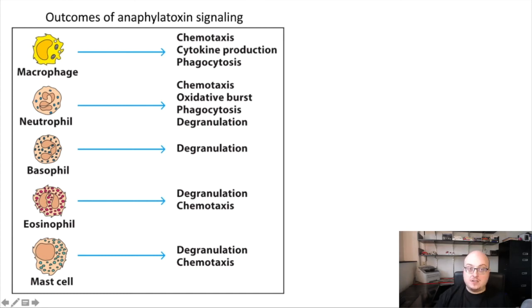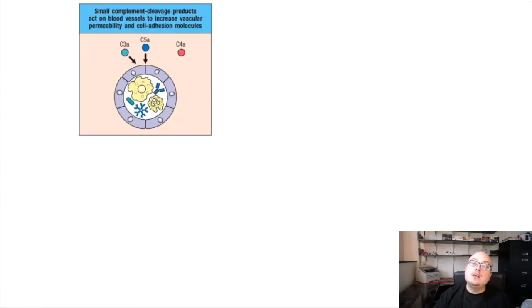So aside from direct activation of cells, another important thing that anaphylatoxins do is actually regulate the blood vessels themselves and induce a process called vasodilation or swelling or relaxation of the walls of the blood vessels. And when they do this, they induce an increase in vascular permeability. So you can see here, we've got C3A and C5A. They're binding to the endothelial cells that make up the wall of the blood vessel.